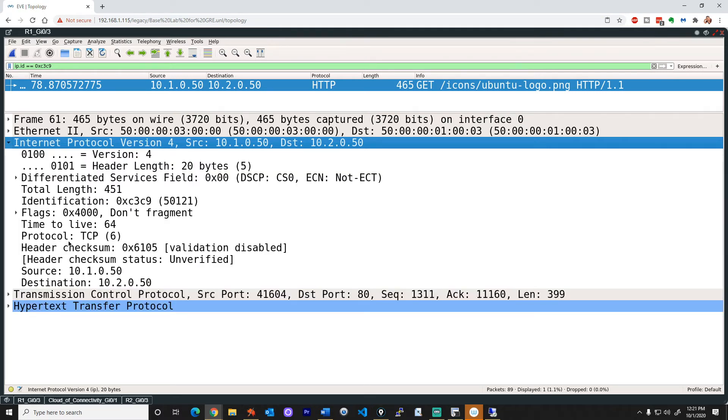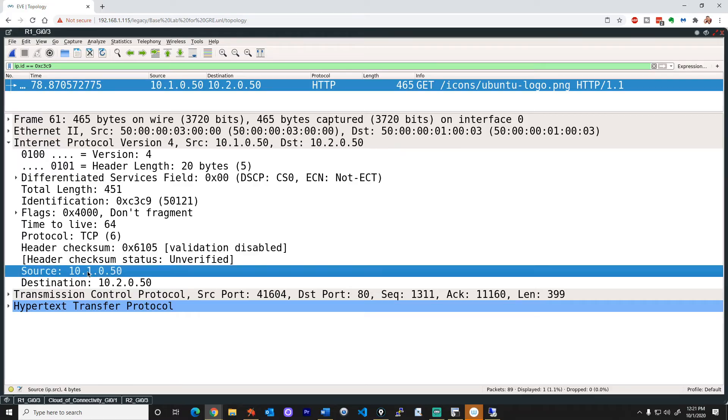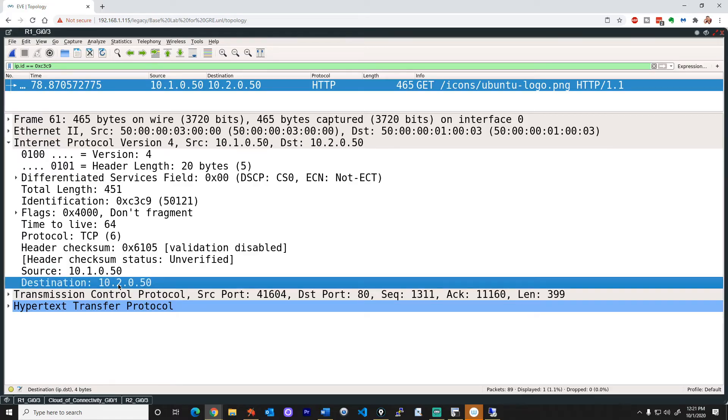So this is a packet being sent before it hits R1. So if we look at the layer 3 information, the source is 10.1.0.50, that's the IP address of PC1. The destination is 10.2.0.50, which is PC2. And that layer 4 is using TCP, and the payload is HTTP.